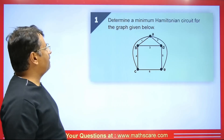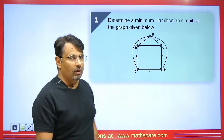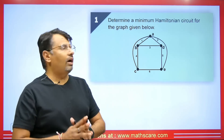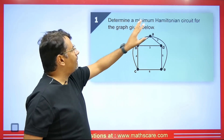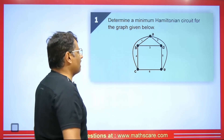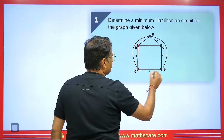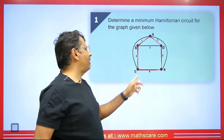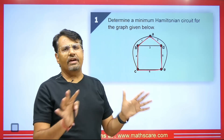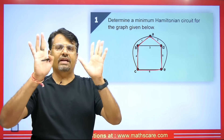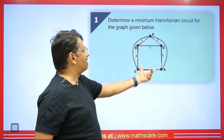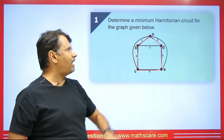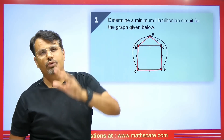Now let's take a few questions. Determine the minimum Hamiltonian circuit for the graph given below. All vertices that are here should be covered — keep in mind that edges don't matter here, your vertices should be covered. You can see it is covering all the vertices, so this is a Hamiltonian circuit — it is closed and covers all vertices.